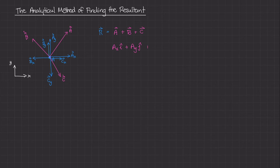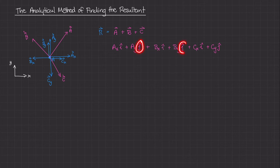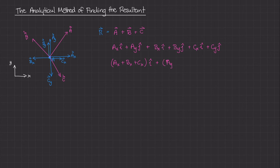We can do the same thing for B and C. For B, it's BX times the unit vector I plus BY times the unit vector J. And for C, it's CX times the unit vector I plus CY times the unit vector J. In this equation, there are two main components: all the scalar quantities multiplied by the I unit vectors, and the vertical J unit vectors. If I rewrite this equation, I can group all the I terms together: AX plus BX plus CX, all multiplied by the unit vector I, and then AY plus BY plus CY times the unit vector J.